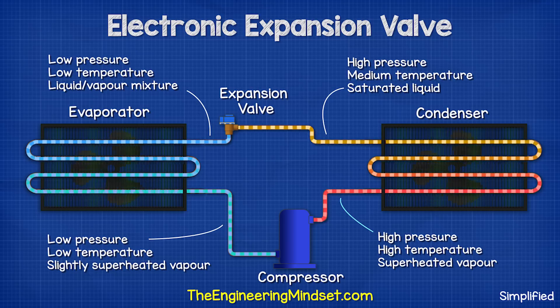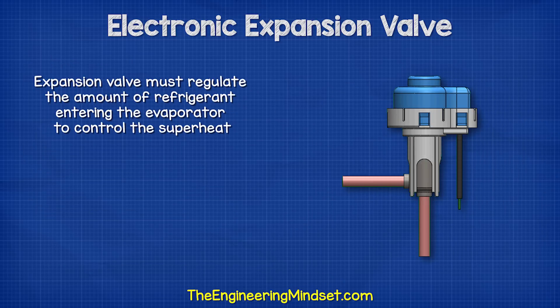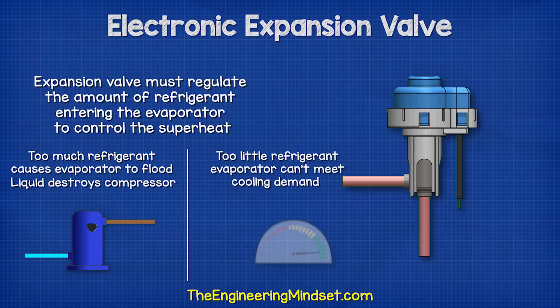The refrigerant therefore exits as a high pressure, medium temperature saturated liquid and this heads to the expansion valve. The expansion valve needs to regulate the amount of refrigerant entering the evaporator to control the superheat. If it allows too much refrigerant to flow it can flood the evaporator, so the refrigerant doesn't evaporate, a liquid reaches the compressor and possibly destroys it. But if it lets in too little refrigerant the system won't provide enough cooling and so it operates inefficiently.